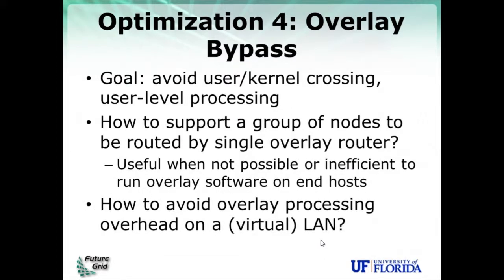Another important optimization is overlay bypass. The goal here is to avoid user-level crossing and user-level processing altogether. The idea is to detect nodes that are within the same local area network and are able to communicate with each other without going through the user-level router.